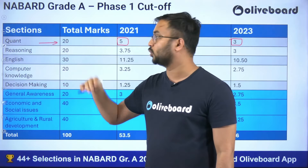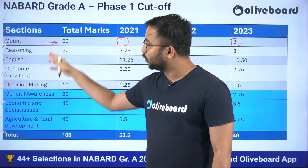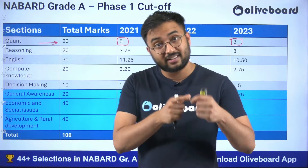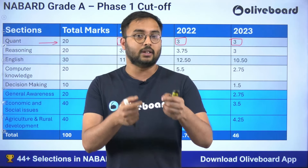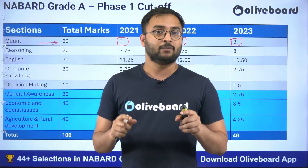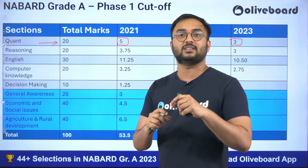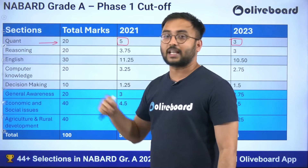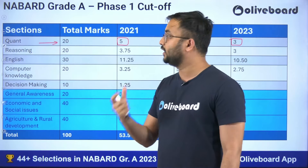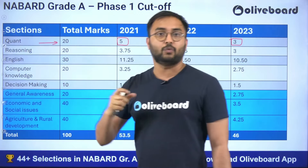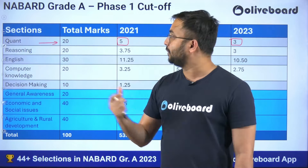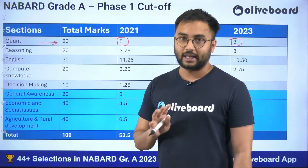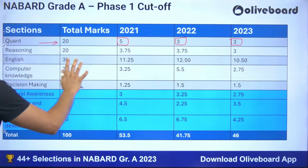In NABARD, you have the independence to attempt sections in any order. For example, if a student is very good in quant and solves those questions quickly, they can then switch to ESI or ARD. So in this way, you understand the quant cutoff and plan accordingly.